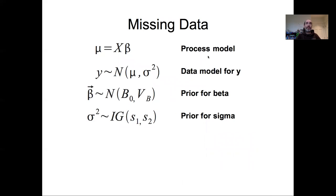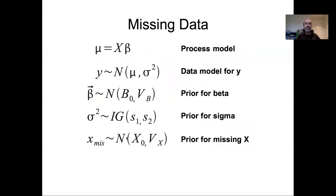Starting from our standard regression model — a standard linear process model, a Gaussian data model, conjugate normal priors on slope and intercept, and a conjugate inverse-gamma prior on sigma — to account for missing data we really only add one additional thing to the model: a prior on our missing x's. The subscript 'miss' refers to just the x's that are missing. All x's that are not missing are observed, so they're not random variables; they don't need priors. In a Bayesian context we treat observed data as fixed and things we don't observe as random — so missing x's get priors, but observed x's do not.